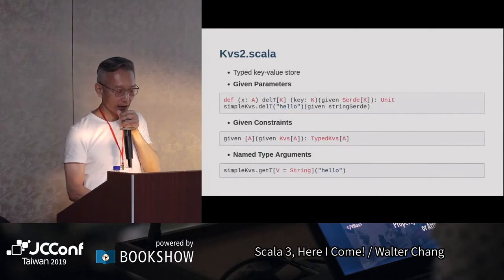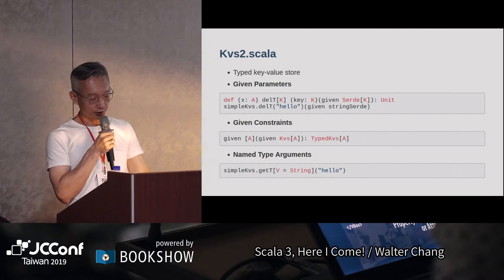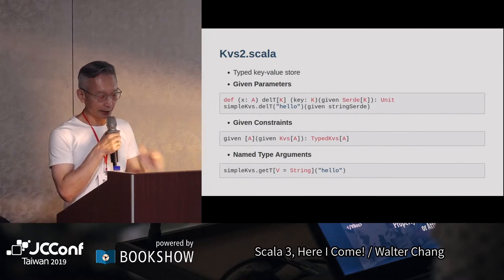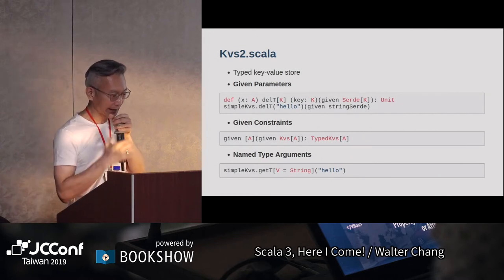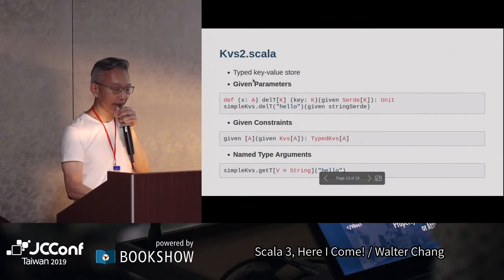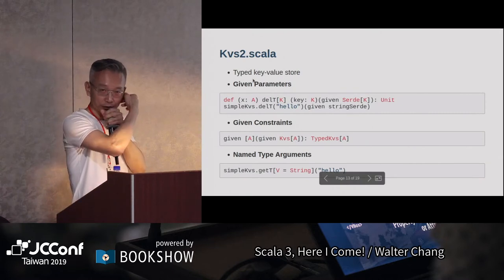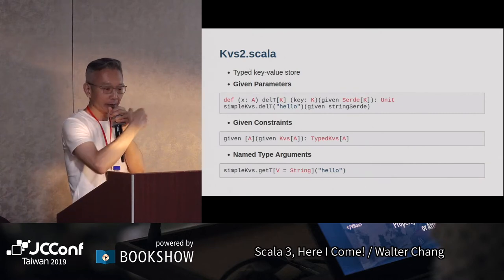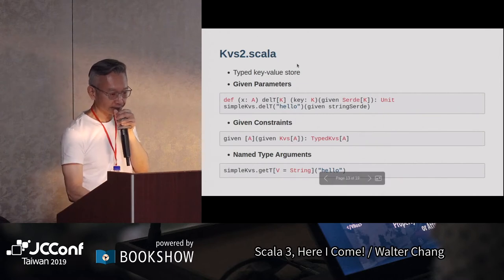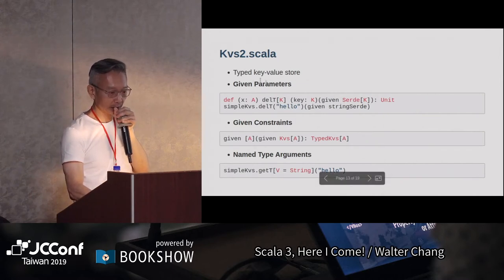好，KVS2呢其實也是一種type class oriented programming的延伸。它最主要是，我們剛才看到的key value都是Vector of bytes，這裡的話我們可以有一個type。這裡我們有介紹所謂的given parameter，就是說你除了一個一般的parameter之外，你後面也有一個given，這就跟Scala 2的implicit parameter是一樣的。